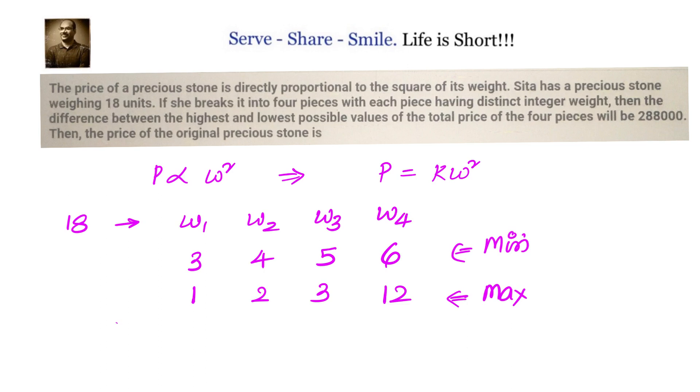Because the weights are in such a way that when you square them and add them, you will get the max number. Now what is the minimum price? K into W square. That is K into 3 square plus 4 square plus 5 square plus 6 square. Simplify that. You get 9 plus 16, 25 plus 25, 50 plus 36, 86K. So you have 86K which is the minimum price.